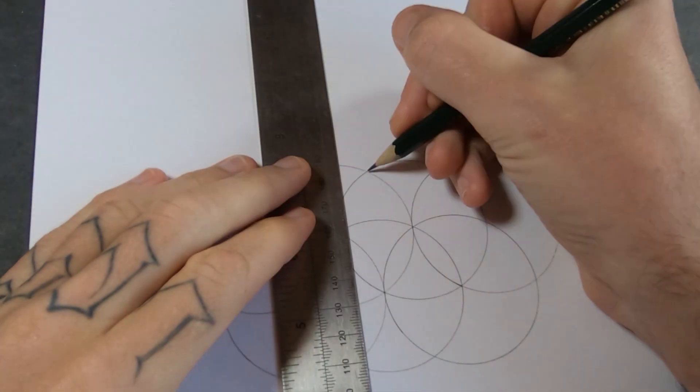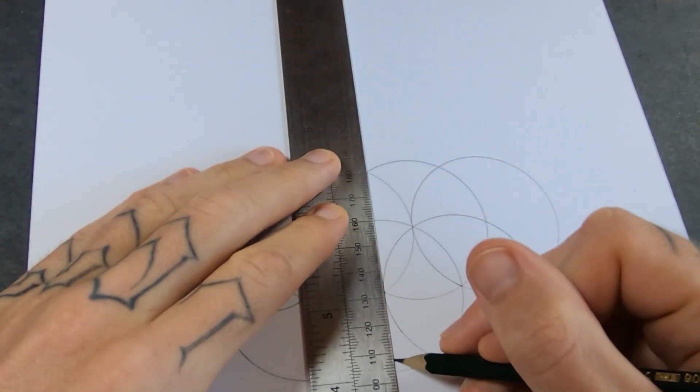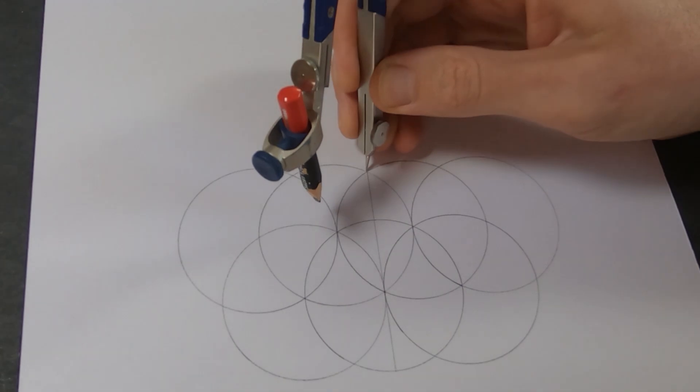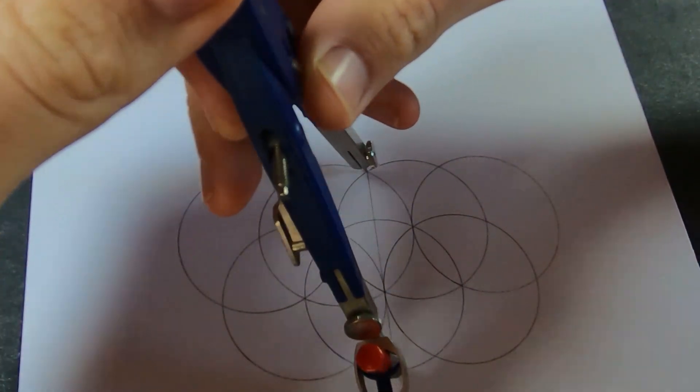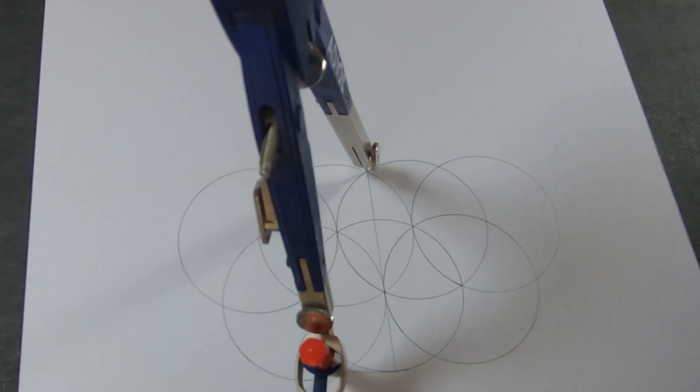So right in the middle we've got the vesica Pisces and I'm going to use that to draw a line down the middle. Then I'm going to set the compass to the length of that line and draw a circle.